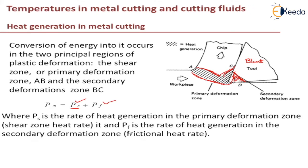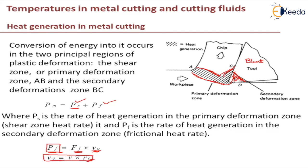Pf is purely because of frictional heat — that is, due to the frictional force between the chip and the tool. We can equate Pf to frictional force into chip velocity. Chip velocity is given by cutting speed into chip thickness ratio. Once we have chip flow velocity V₀ and frictional force, we can find the heat generated due to frictional force. Then, knowing the total input energy Pm, we can find Ps — the heat generated in the primary deformation zone.